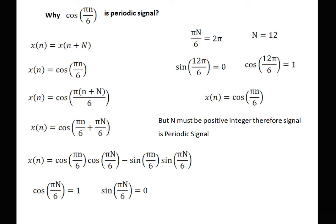Now see the next example: why is cos(πn/6) a periodic signal? The equation is x(n) = x(n + N). We have x(n) = cos(πn/6). We replace n by n + N, giving cos(π(n + N)/6) = cos(πn/6 + πN/6). We expand using the formula cos(A + B) = cos(A)cos(B) − sin(A)sin(B).